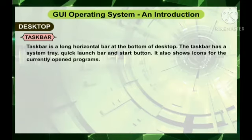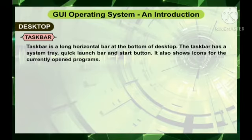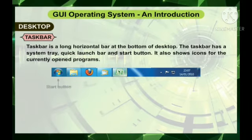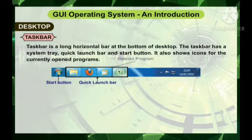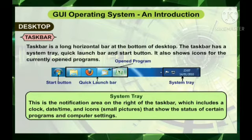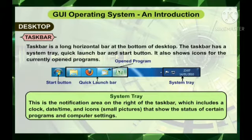Taskbar is a long horizontal bar at the bottom of the desktop. The taskbar has a system tray, quick launch bar, and start button. It also shows icons for the currently open programs. The system tray is the notification area on the right of the taskbar, which includes a clock, date or time, and icons that show the status of certain programs and computer settings.